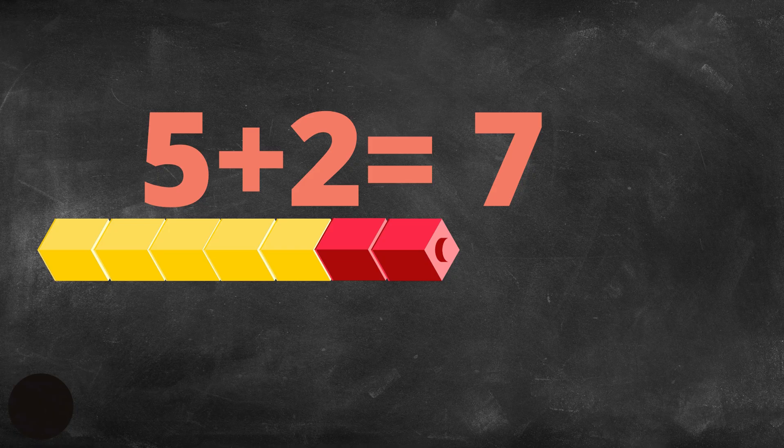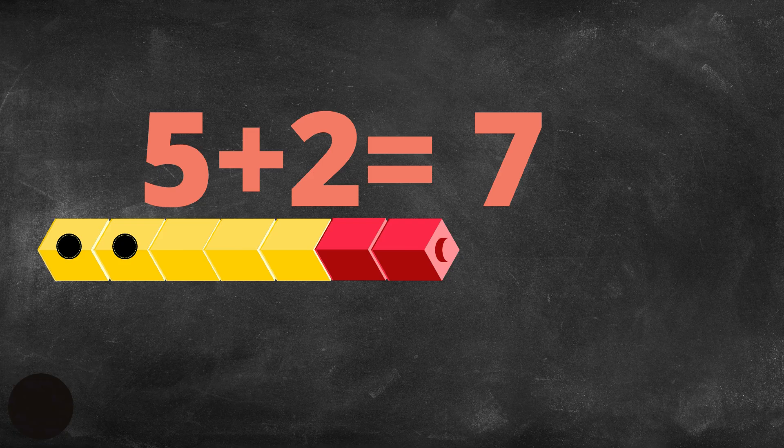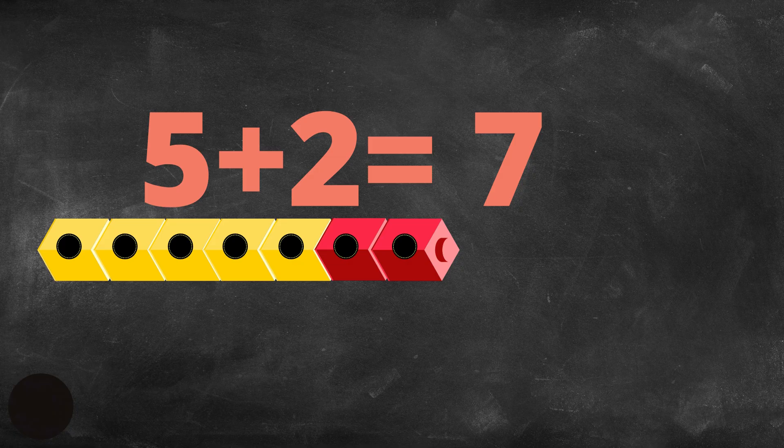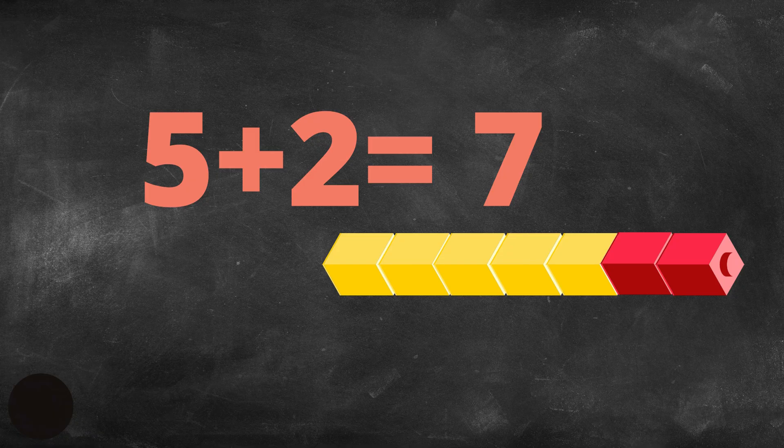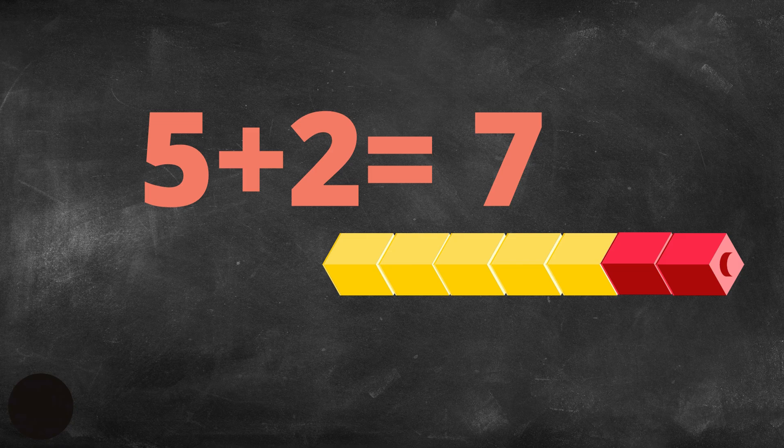So here, 5 yellow cubes plus 2 red cubes equals 7 cubes. Let's count that just to make sure that they are really 7. 1, 2, 3, 4, 5, 6, 7. 5 plus 2 equals the sum of 7. 5 yellow cubes plus 2 red cubes is equal to 7 cubes.